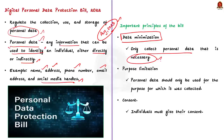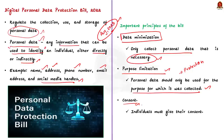The next important provision is purpose limitation, meaning that personal data should be used only for the purpose for which it is collected. This is to ensure the protection of personal data of the citizen. The bill also mentions consent — individuals must give their consent before their personal data can be collected, used or disclosed by organizations.